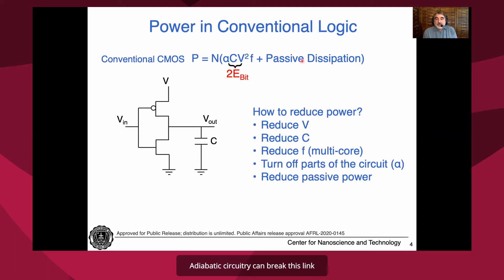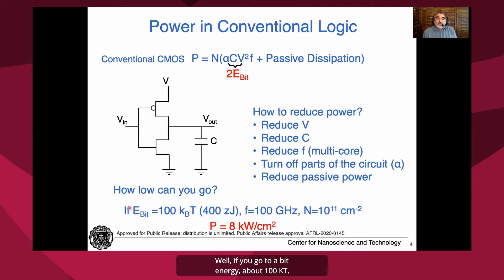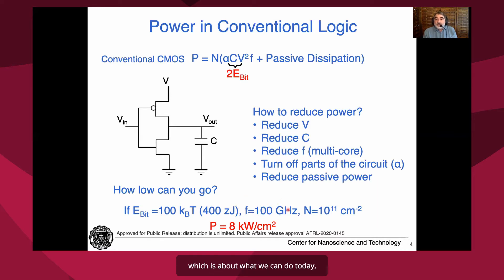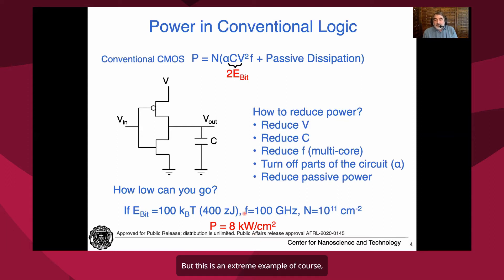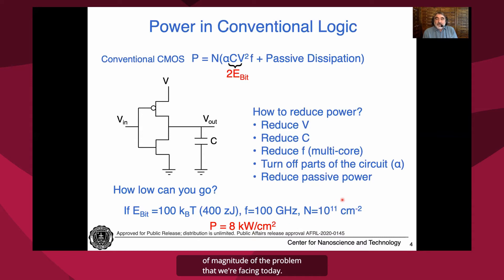Adiabatic circuitry can break this link between passive and active power. How low can you go? If you go to a bit energy of about 100 kT — about the lowest for mistake-free computation — that's about 400 zeptojoules at room temperature. If you run at 100 gigahertz with a device density of 10 to the 11th per square centimeter, you get 8 kilowatts per square centimeter, which is more than the surface of the sun. This is an extreme example, but it gives an order of magnitude of the problem we're facing today.